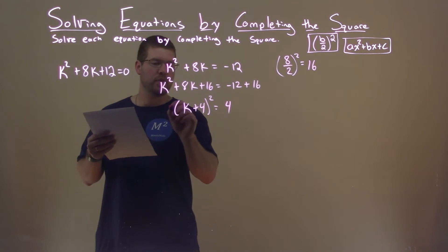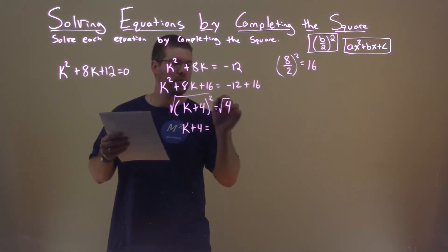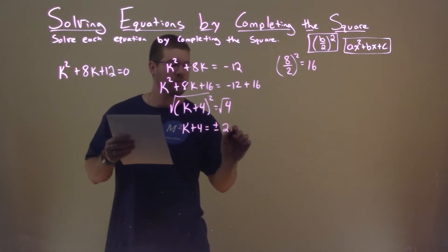Simplify this, or solve. We take the square root of both sides, and we have k plus 4 equals square root of 4, which is 2. We have plus or minus 2 here.